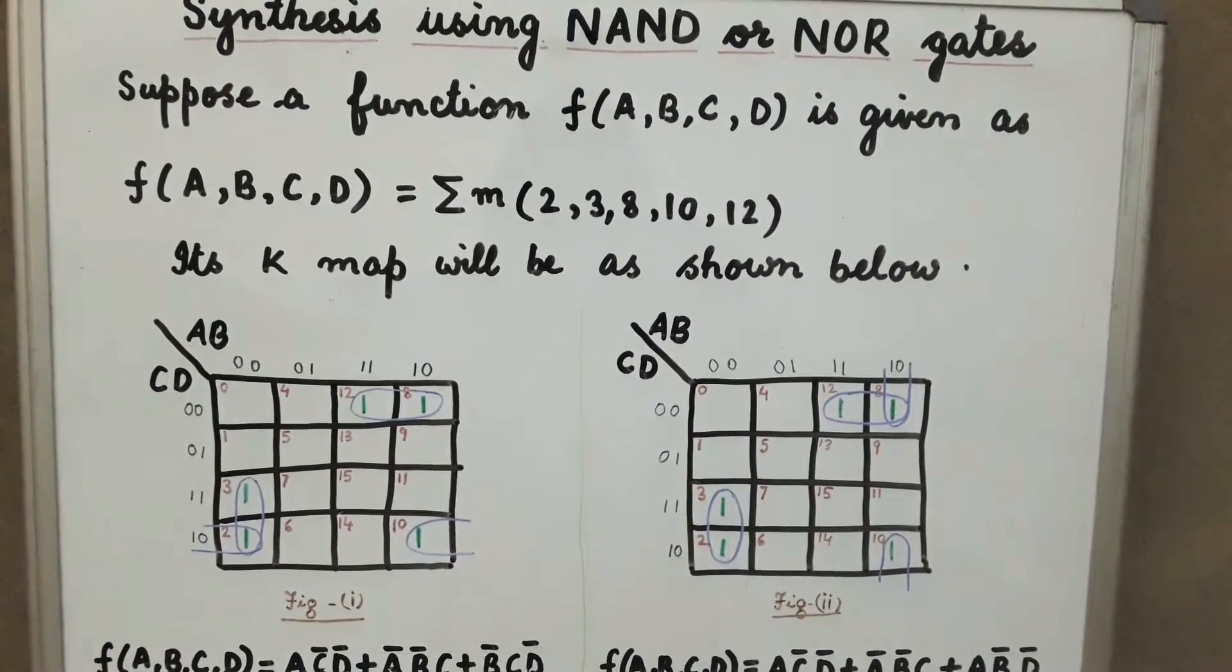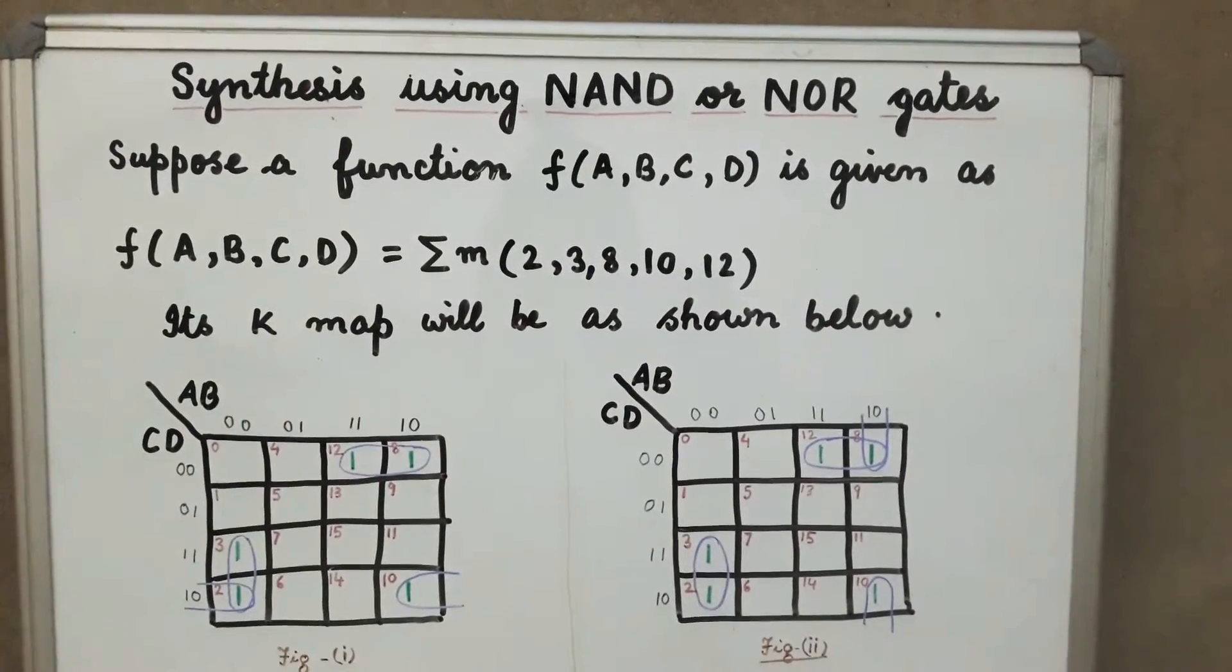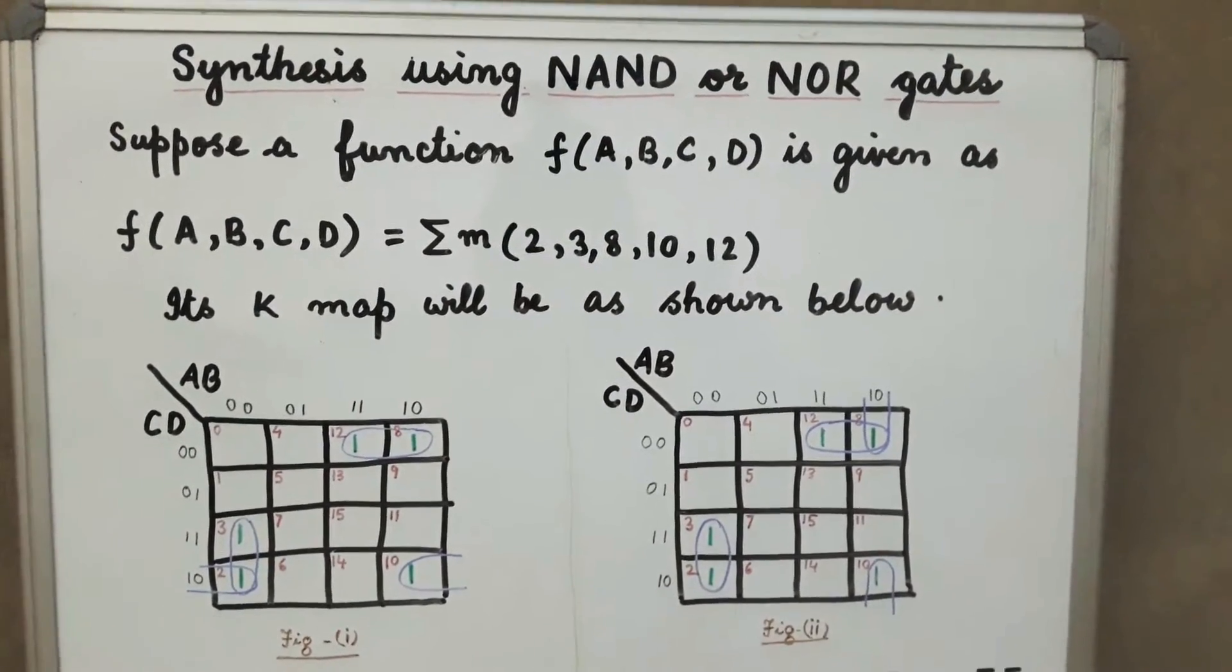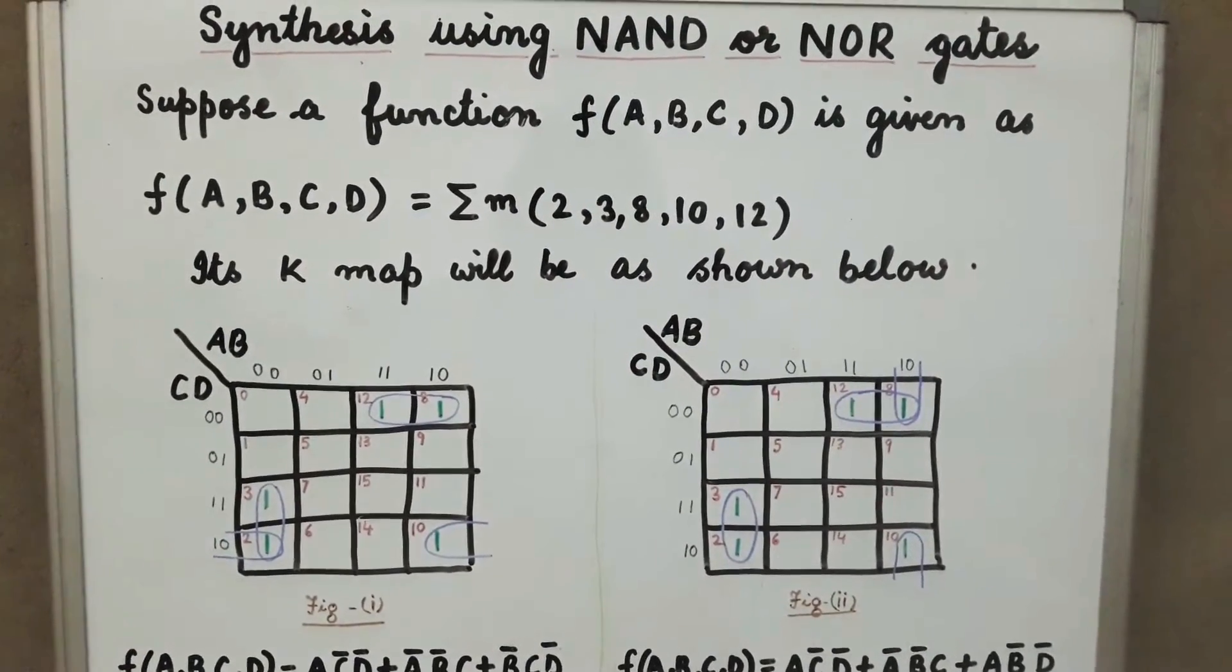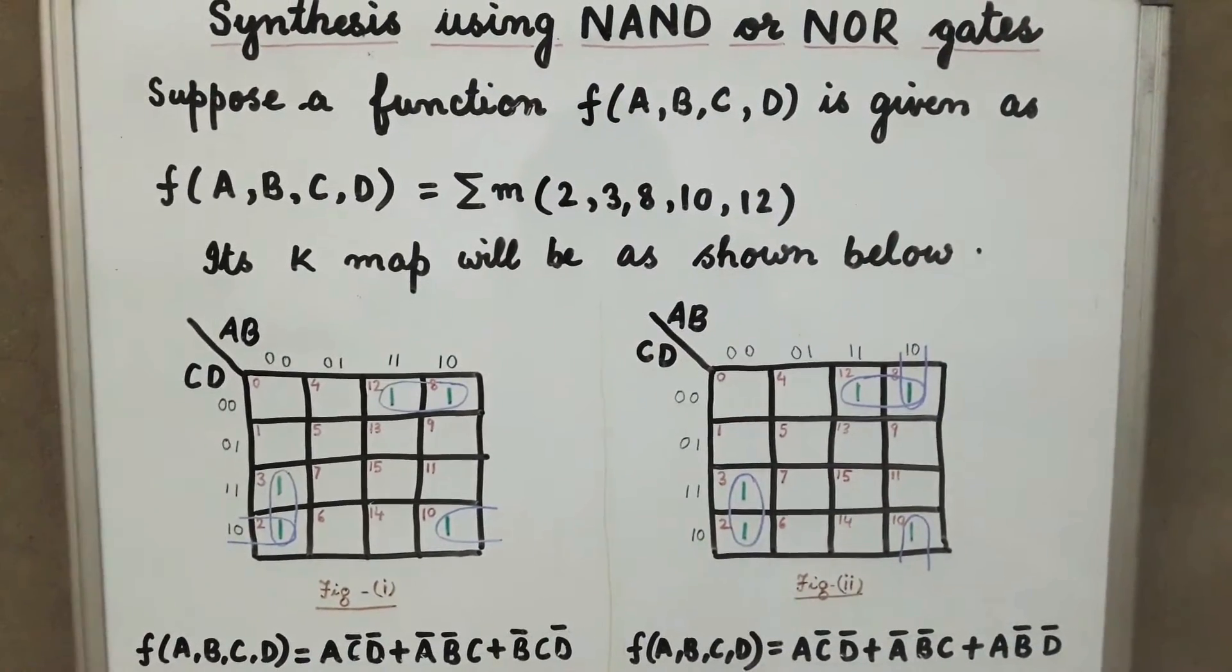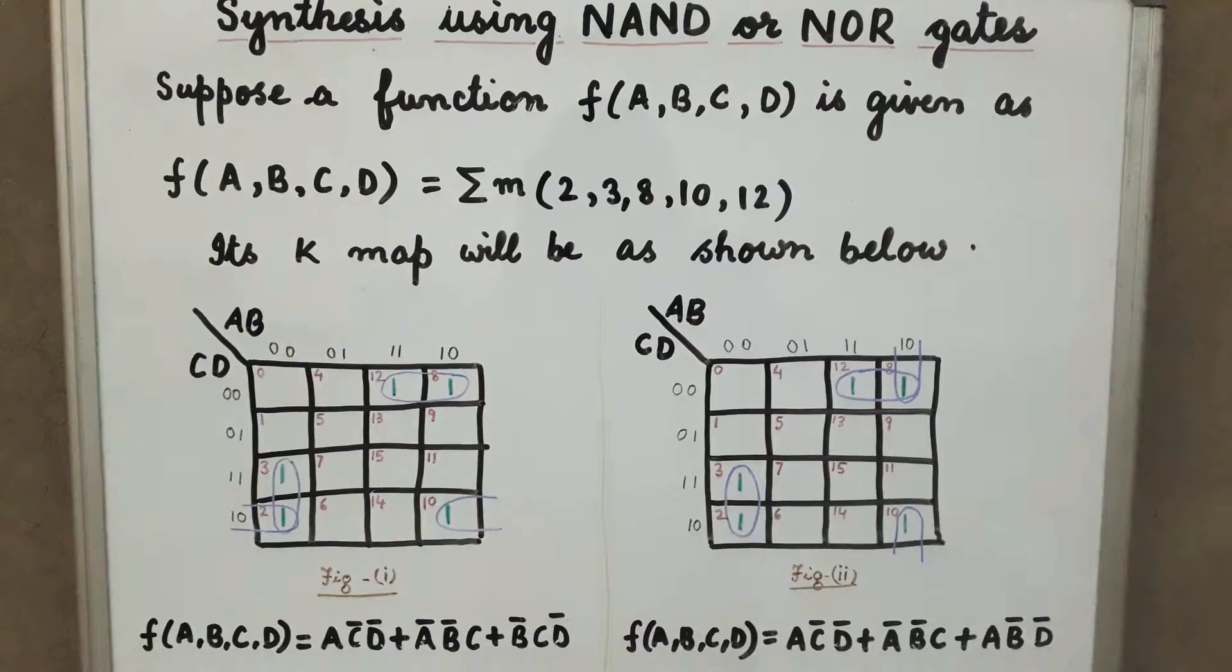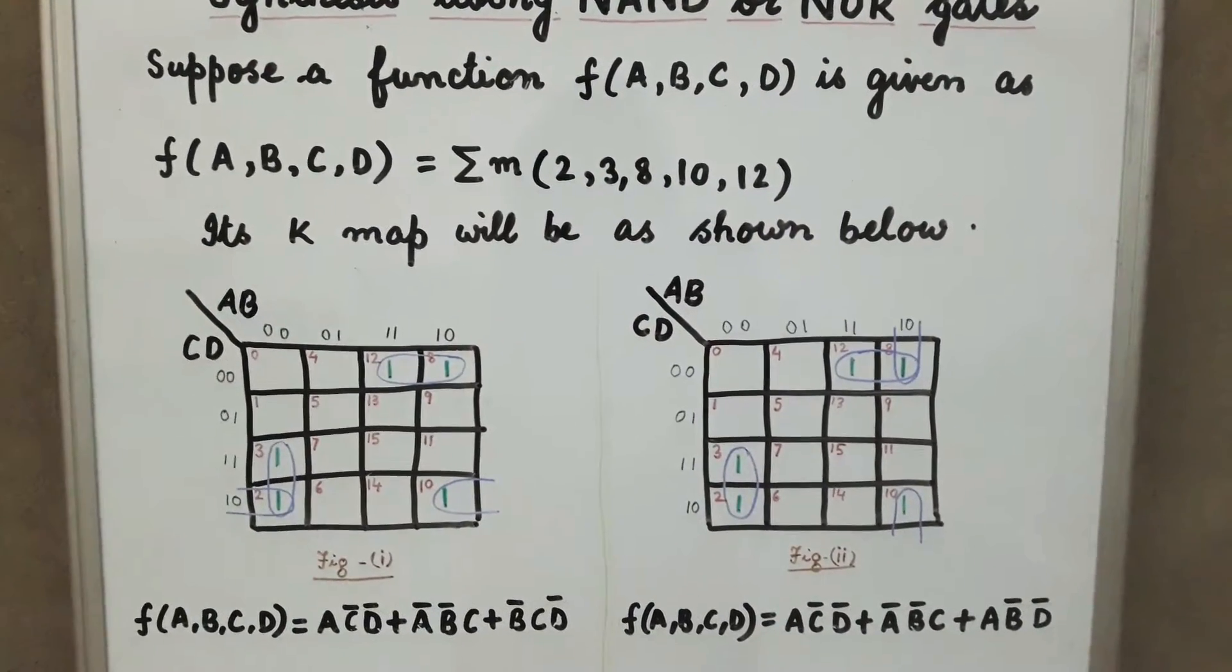Since the function is expressed in terms of minterms, we can express this function in the sum of products form. For this, first we will draw the K-map of this function. We will get the K-map as shown in figure 1 and figure 2.